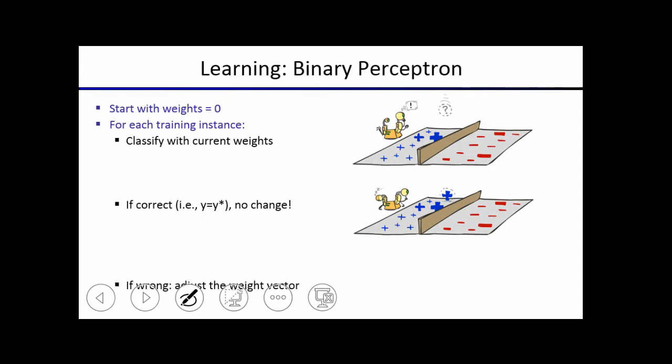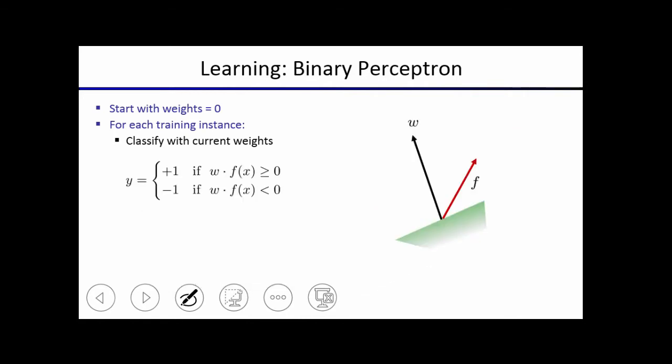If it's wrong, then it adjusts the weight vector. And so more specifically, if you have your example x, and then you have your feature vector f of x right here, and then you have your weight vector right here.